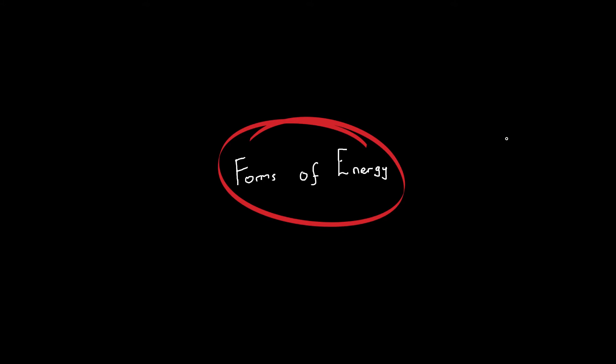In this video we're going to talk about different forms of energy. The first thing we need to realize is that energy cannot be created or destroyed — energy is converted from one form to another. That's really important when we're looking at different types of energy, because we don't just magic that form of energy. For example, in an electric train, the electricity has to come from somewhere and will be transferred from another form of energy — it's not made out of nothing.